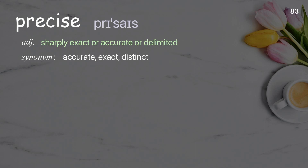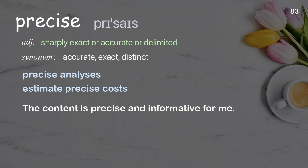Precise: Sharply exact, or accurate, or delimited. Examples: Precise desire. Precise estimate. The content is precise and informative for me.